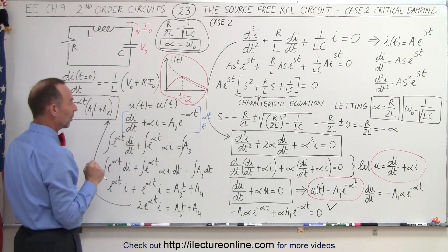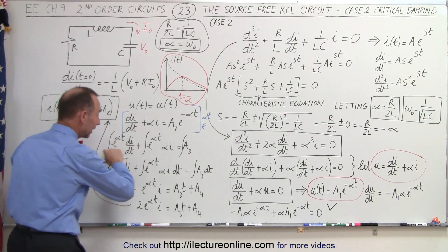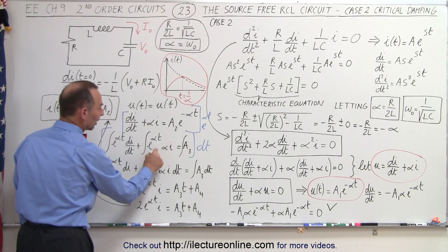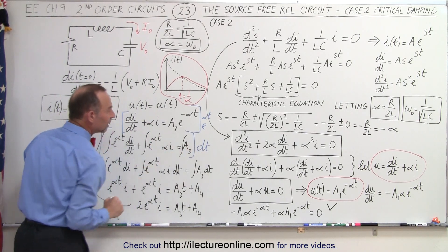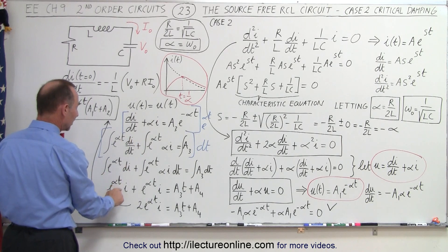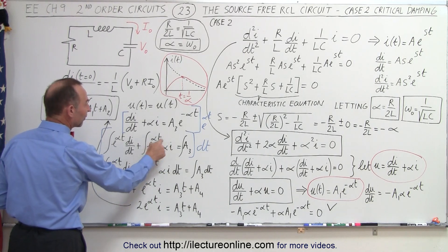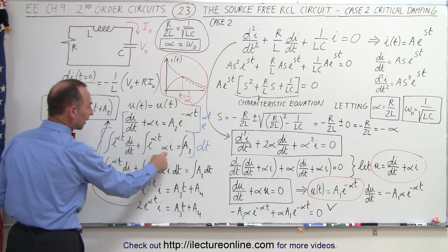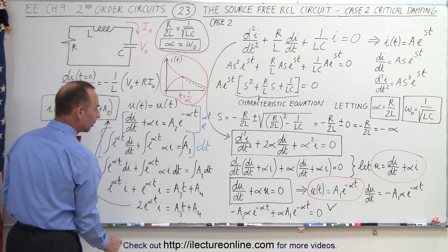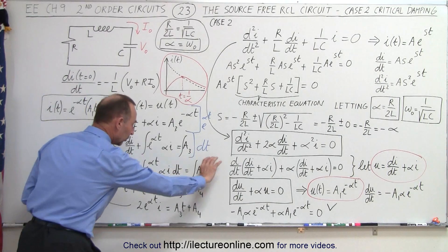Then we integrate both sides of the equation. First, we multiply everything through by dt so that each term has a dt for integration. The integral of di gives us e^(αt) times i on the left side. On the right side, integrating e^(αt) requires an alpha factor, and the integral of a constant gives us A₃t plus another constant A₄. So we now have integrated everything on both sides of the equation.